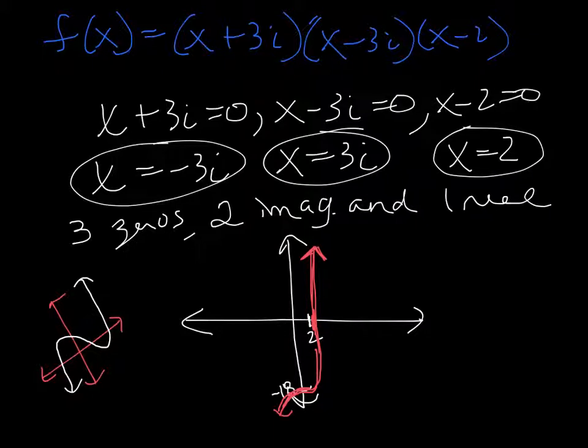So it only goes through the axis one time. So there's an example of a cubic that doesn't have all real roots. It's got a combination of real and imaginary, or real and complex.